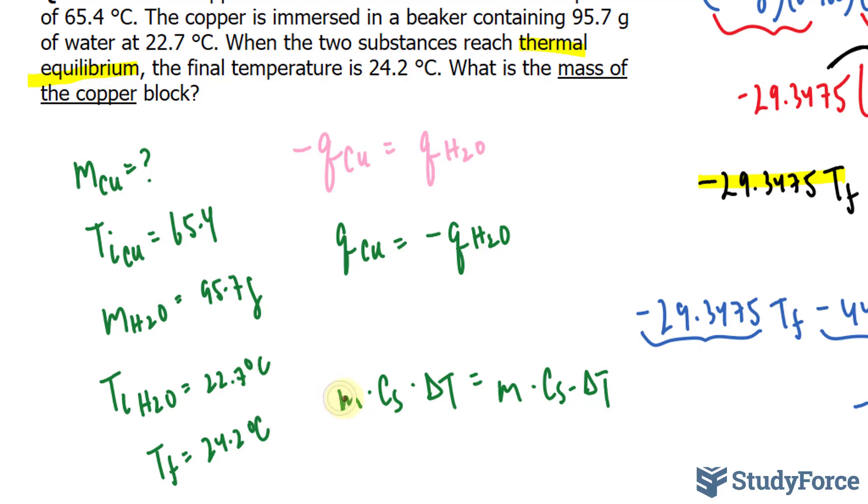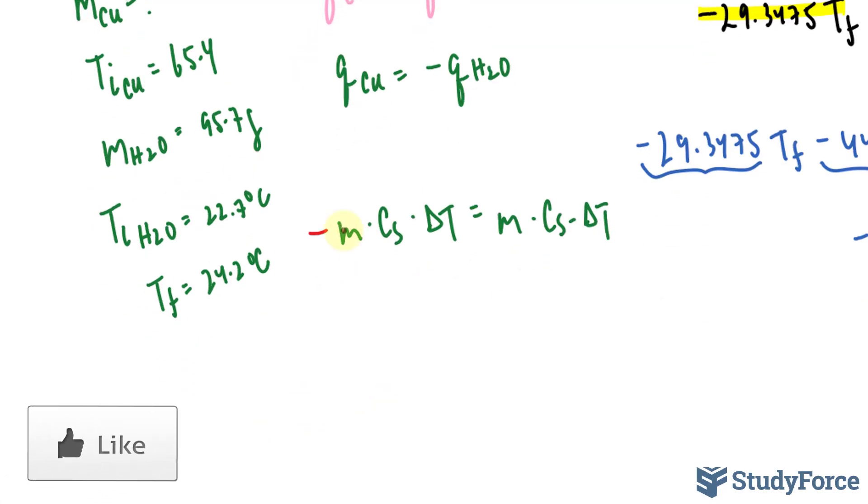This equals M times C sub S times delta T of water. And it doesn't matter where you put the negative, over here or over here. It doesn't change the final answer. Now let's substitute the things we know. We don't know M of copper, so we'll leave that the way it is. We can find out what the specific heat capacity of copper is using any table that your textbook provides.